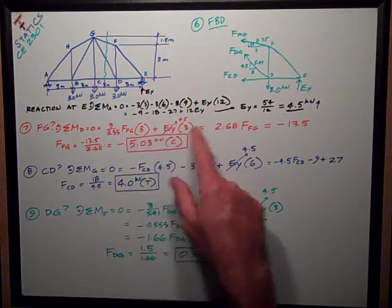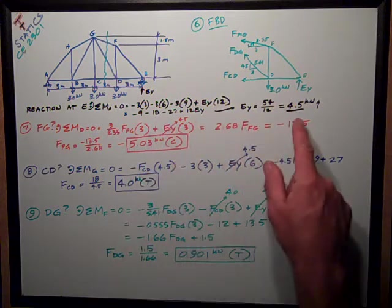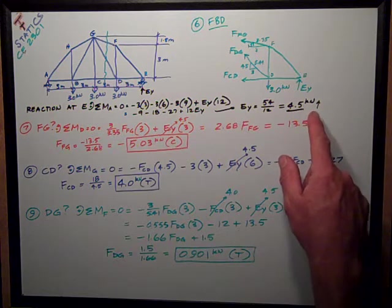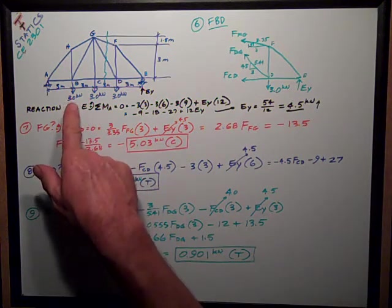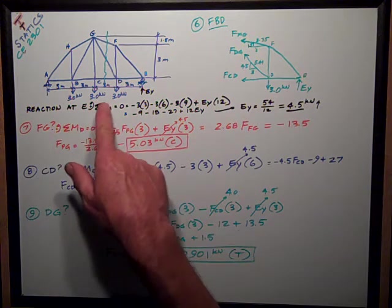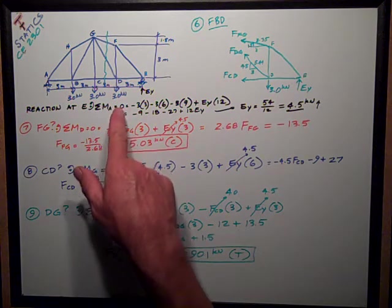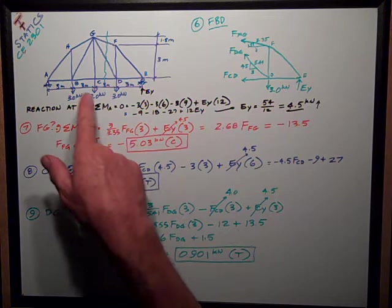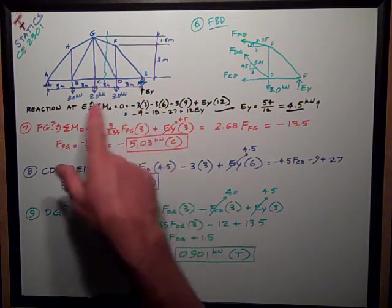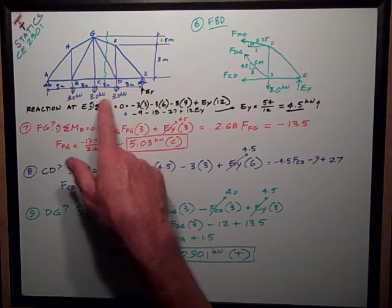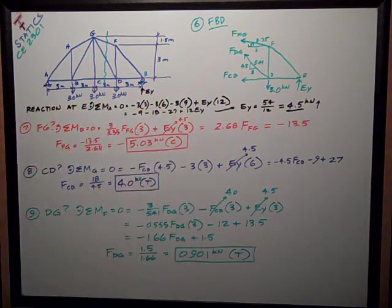I get EY is equal to 54, which is this sum 9, 18, and 27, divided by 12, is equal to 4.5 kilonewtons. That is, of course, real predictable because I've got 3, 6, and 9 kilonewtons applied uniformly, symmetrically. So half the vertical load is going to go here, half of 9, half of it's going to go over there to A.